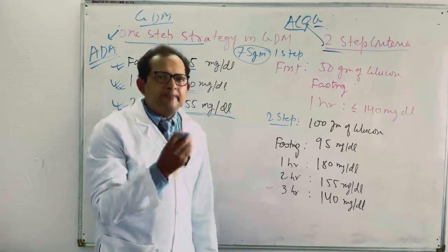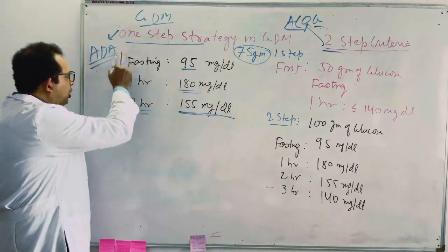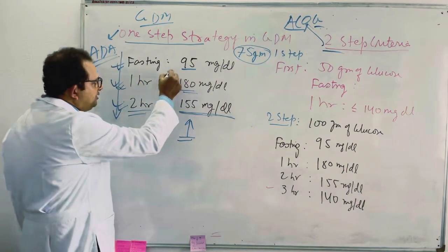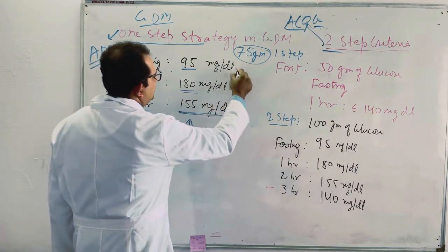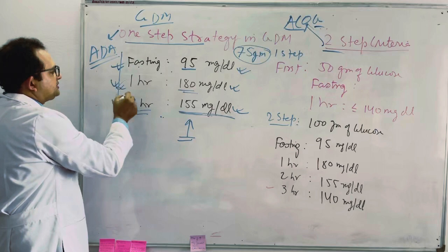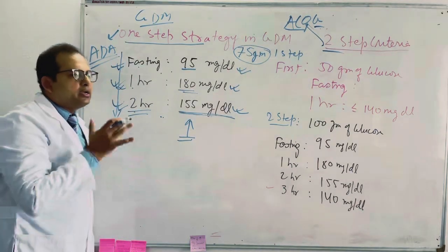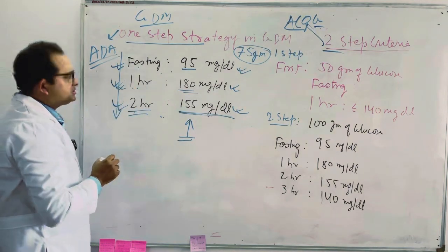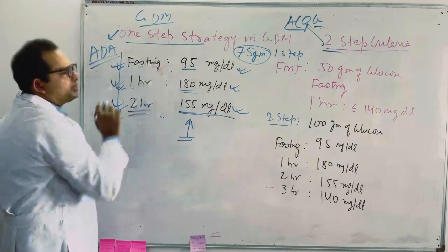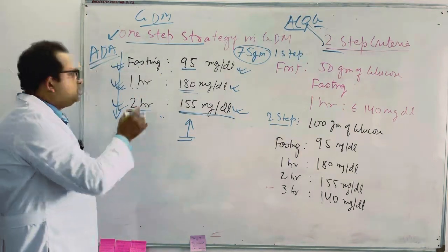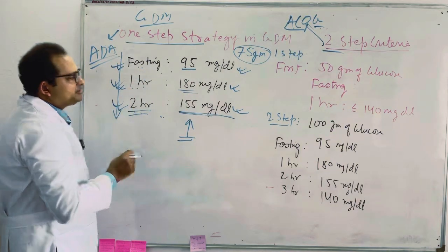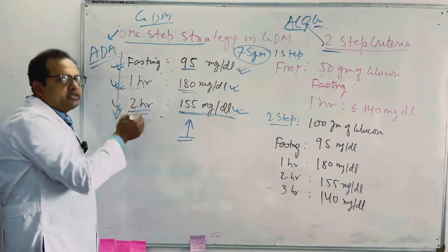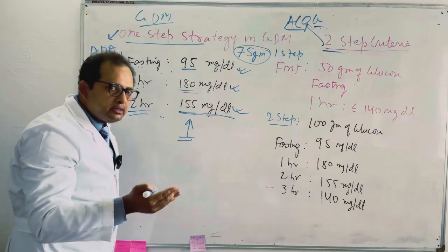But here there is a catch you must know and understand: among all three, it is not required to come in an increasing state. If any one of them, either fasting or one hour or two hour, comes beyond the range, the patient is gestational diabetic. For example, if patient has normal one hour sample and normal two hour but fasting is more than 95, she is gestational diabetic. Or if fasting and one hour is normal range but two hour is more than 155, then she is gestational diabetic. It means any of the values exceeding the normal range will consider patient as gestational diabetic.